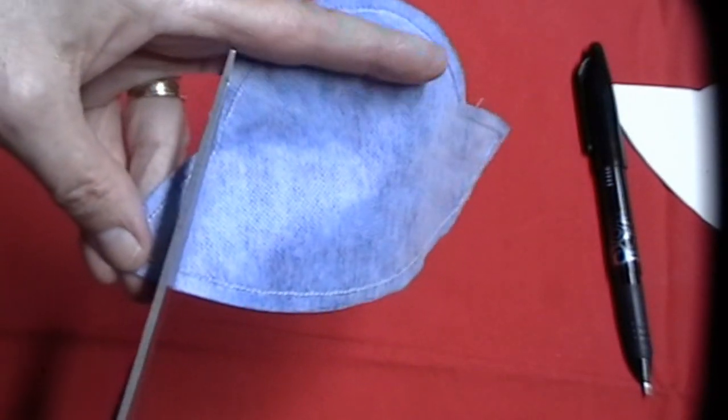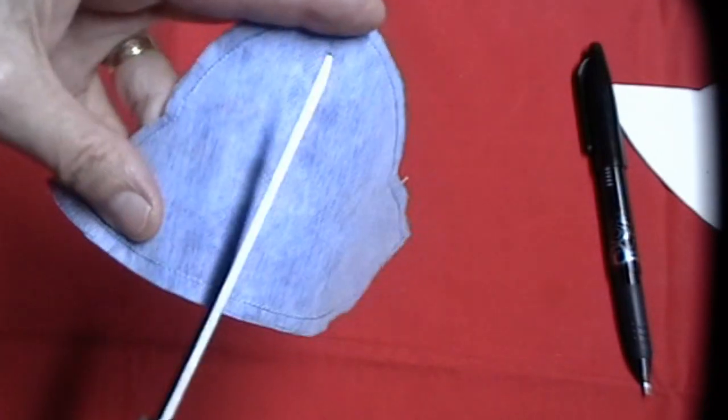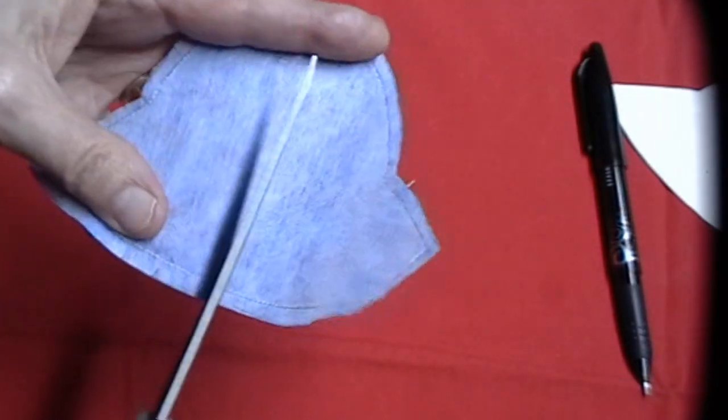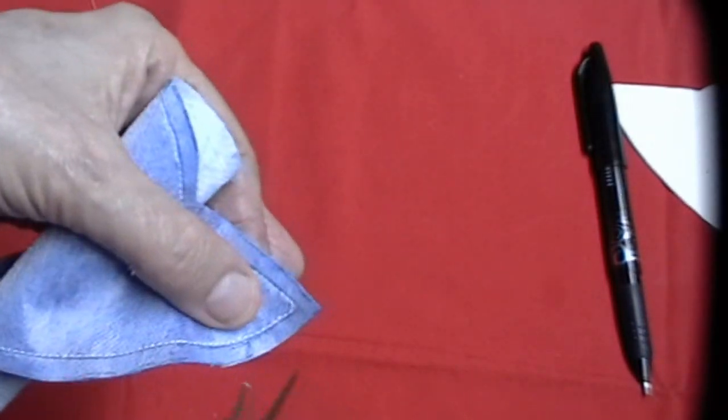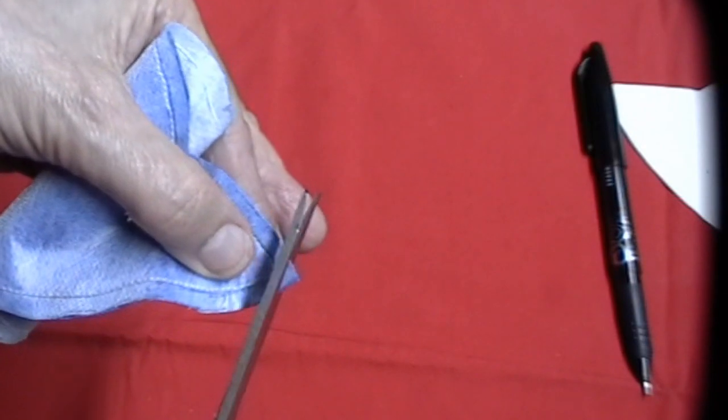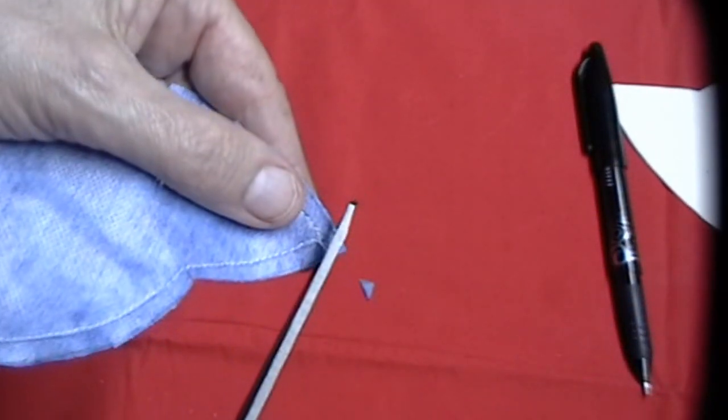I'm clipping my edge all the way around just little tiny cuts that will open it up as I turn it. The corners right here, you want to trim off your corners so you won't have that bulk when you turn it.